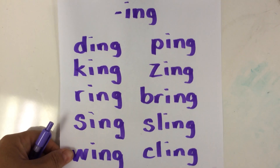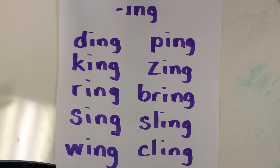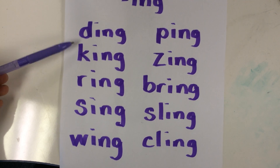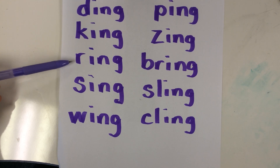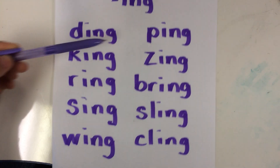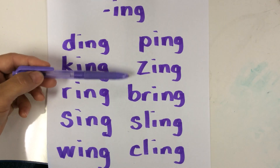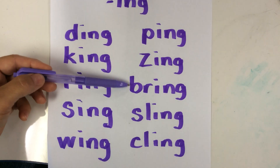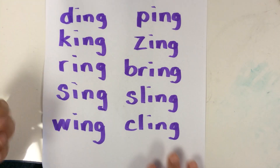And let's take a break from that for just a second. I forgot about this word family that we were working on: -ing. I went back to the -ang family by accident yesterday. All right, so we have: d-ing, ding; k-ing, king; r-ing, ring; s-ing, sing; w-ing, wing; p-ing, ping; z-ing, zing; br-ing, bring; sl-ing, sling; cl-ing, cling. All right, very good.